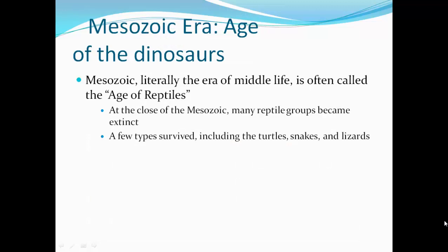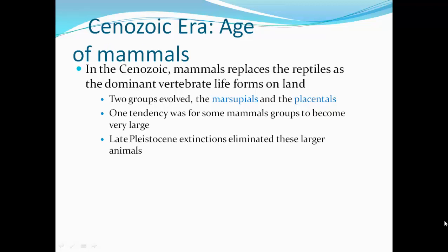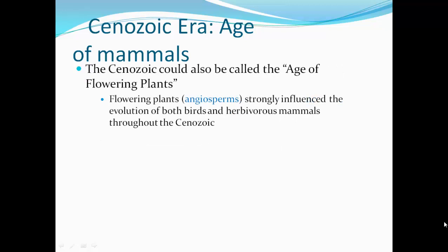At the close of the Mesozoic, many reptile groups became extinct. A few types survived, including turtles, snakes, and lizards. In the Cenozoic, mammals replaced reptiles as the dominant vertebrate life form on land. Two groups evolved: the marsupials and the placentals. One tendency was for some mammal groups to become very large, but late Pleistocene extinctions eliminated these large animals. Flowering plants strongly influenced the evolution of both birds and herbivorous mammals throughout the Cenozoic.